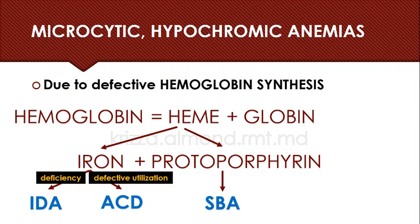Iron and protoporphyrin are components of heme. So if iron deficiency anemia, anemia of chronic disease, and sideroblastic anemia are the types of anemias given to you, please know that the problem is in the heme portion of the hemoglobin molecule. But what if the heme is okay but there are still microcytic hypochromic anemias?